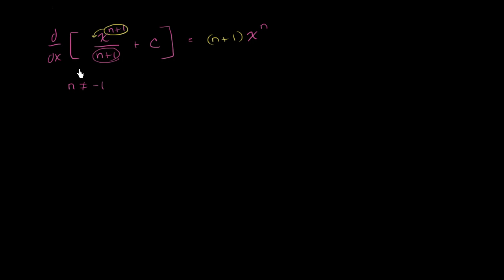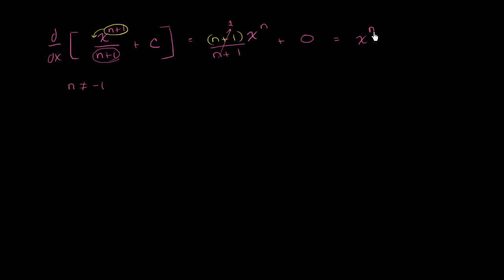And we can't forget that we were dividing by n plus 1, so we have divided by n plus 1. And then we have plus c — the derivative of a constant with respect to x; a constant does not change as x changes, so it is just going to be 0. Since n is not equal to negative 1, this is just going to be something divided by itself, which is 1. And this whole thing simplifies to x to the n. So the derivative of this thing, in very general terms, is equal to x to the n.